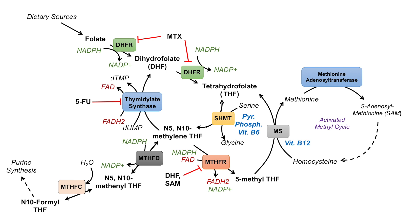This pathway can lead to many different outcomes depending on what the cell needs. If we think of N5,N10-methylene tetrahydrofolate as the hub of the pathway, it becomes more simple. It can lead to four different outcomes. First, N5,N10-methylene tetrahydrofolate can be reprocessed back into tetrahydrofolate by the enzyme serine hydroxymethyltransferase — this reaction is reversible, and depending on whether we have enough serine or glycine, the reaction can be pushed either direction.